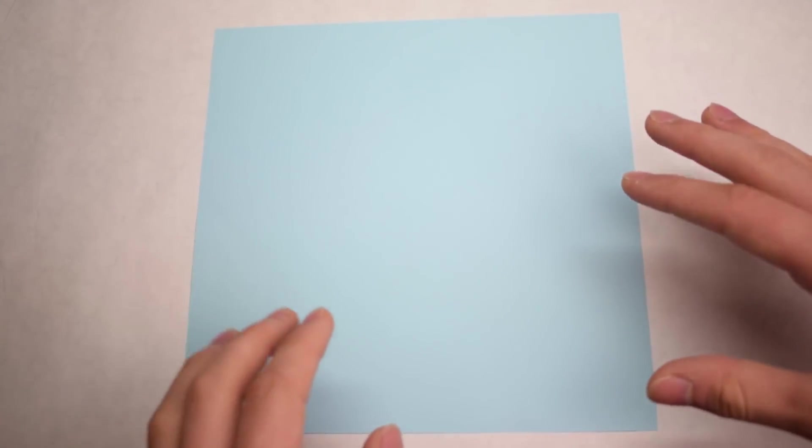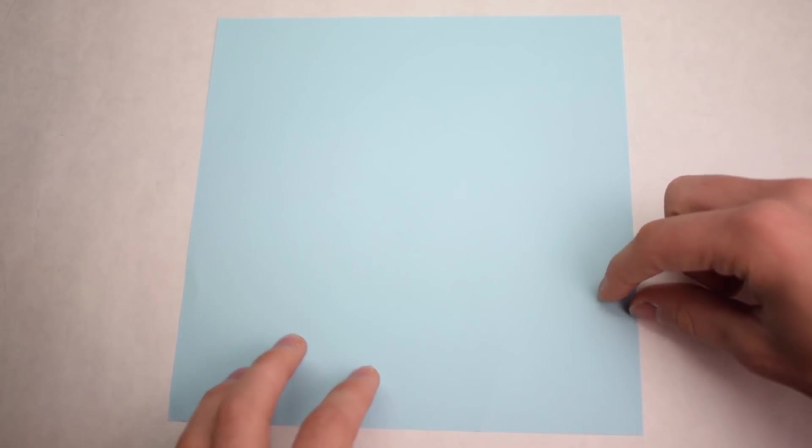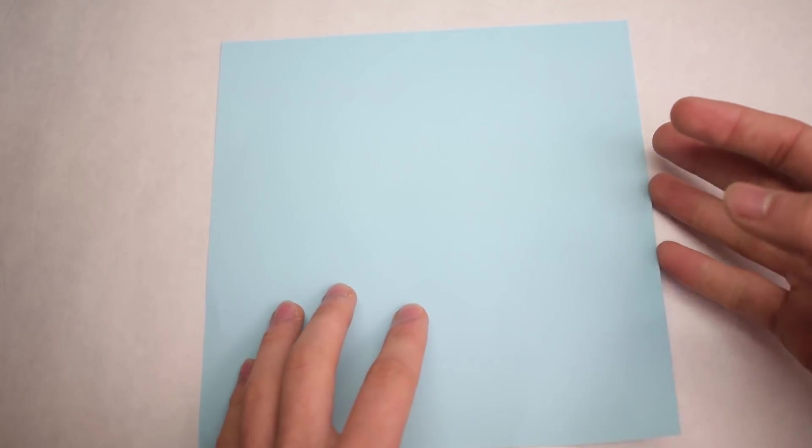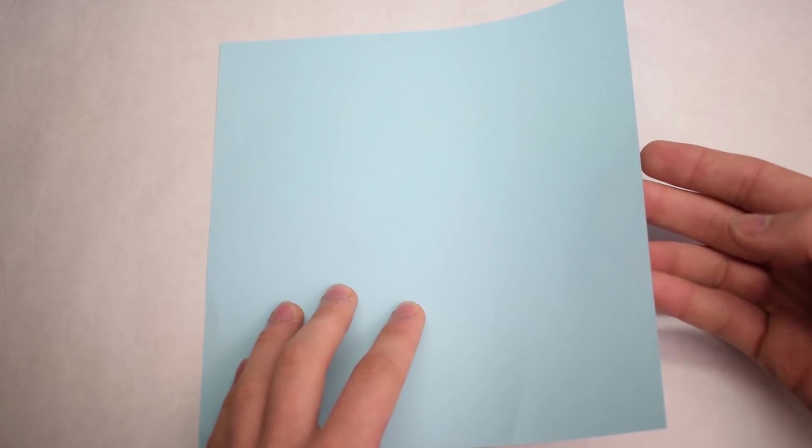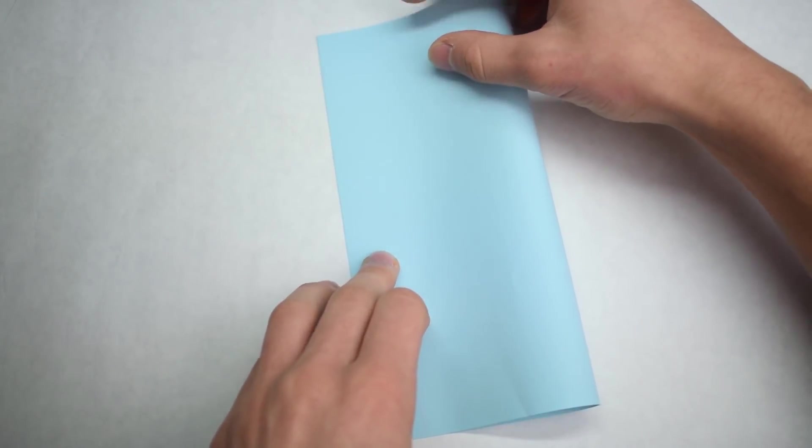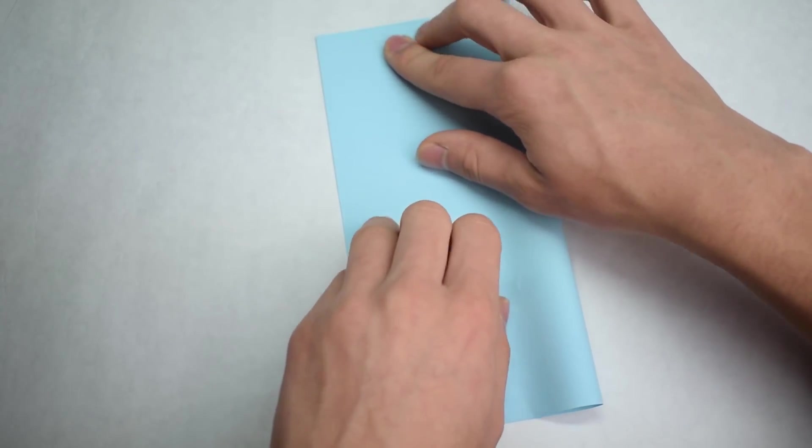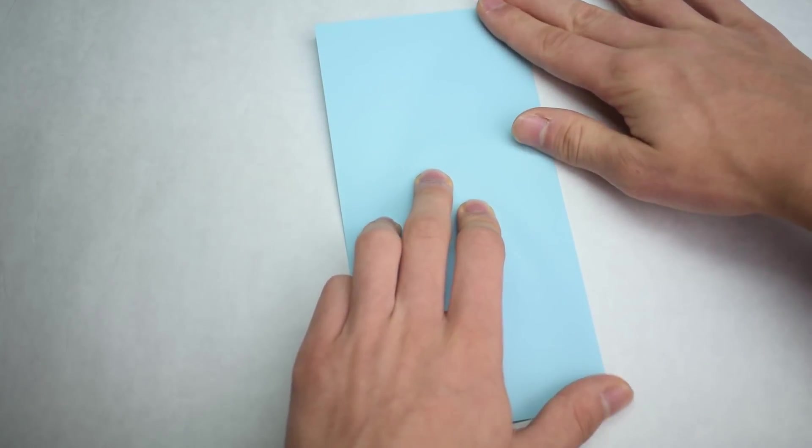It doesn't really matter. A size that does work is 1/16th of a square. For example, I'm going to fold this in half and divide it equally into 16 segments.